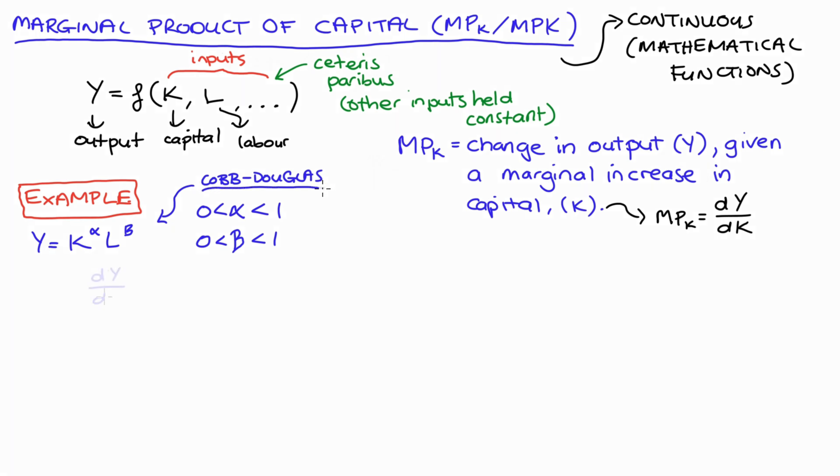Taking the derivative of this function with respect to capital, we're going to get α × K^(α-1) × L^β, and this is our marginal product of capital. If we had some figures for labor and capital and our alpha and beta, we just substitute those figures in to find our marginal product.